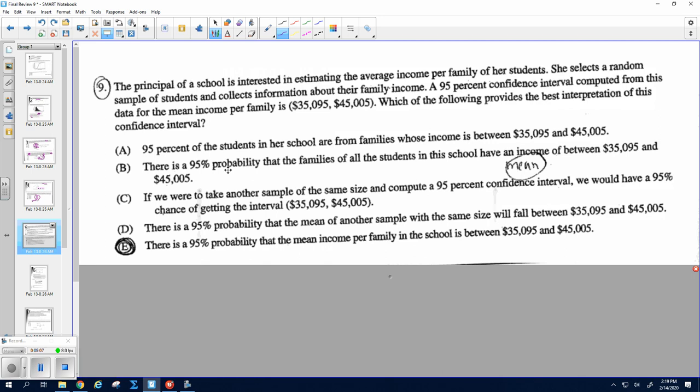There's a 95% probability that the families of all the students in the school have an income between this and this. That kind of is saying the same thing, not what we're looking for. C, if we were to take another sample of the same size and compute a 95% confidence interval, we would have a 95% chance of getting this interval. Nope, so if you take another sample, this could be a totally different interval based on a different sample that we've got.